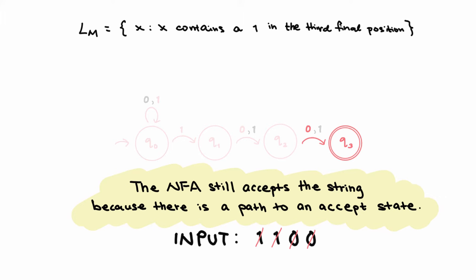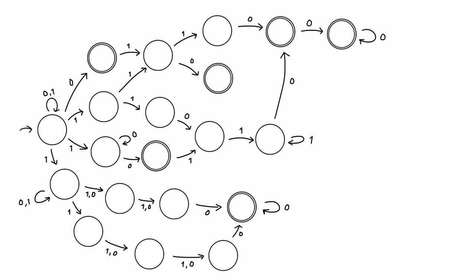Let's look at another example to better understand how an NFA accepts the string. Consider this NFA. By construction, this NFA would accept any string that ends with a 0 and will never accept the string that ends with a 1.